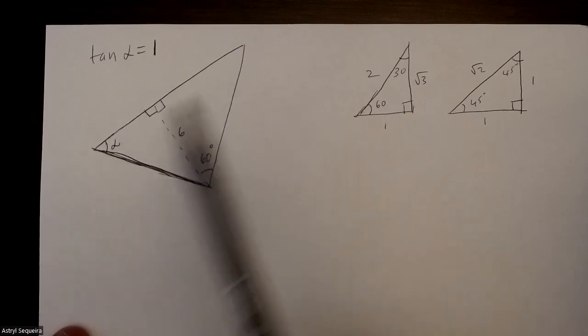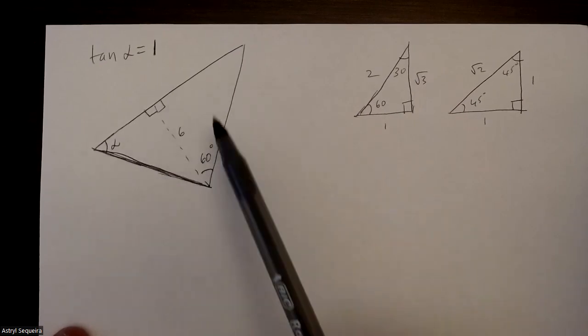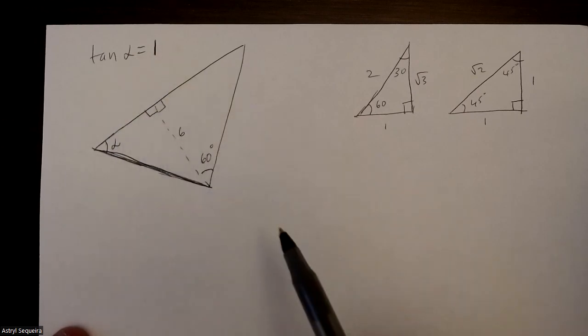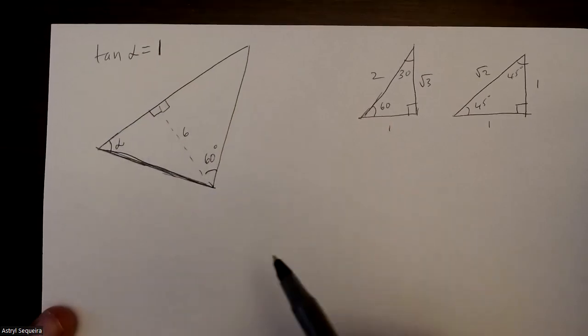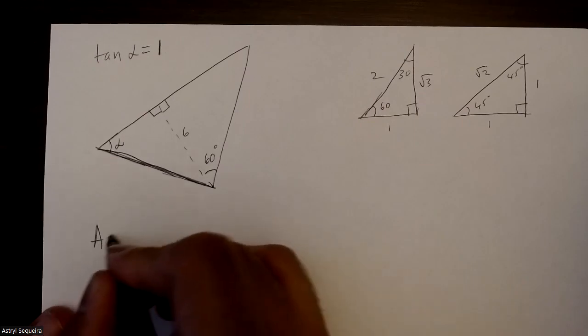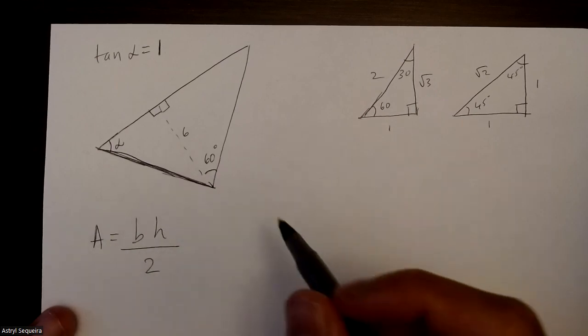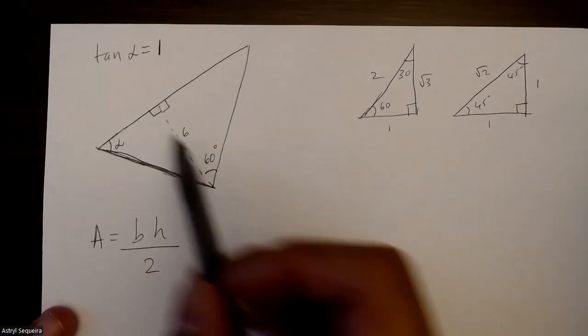Alright, so I want to determine the exact area of this triangle right here, and I know that tan α equals one. I'm not allowed a calculator for this question. I know that the area of a triangle is just base times height divided by two.